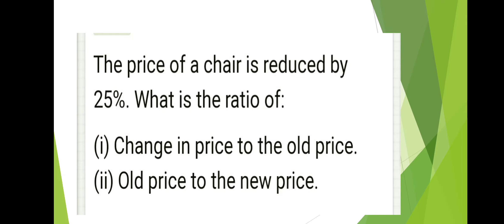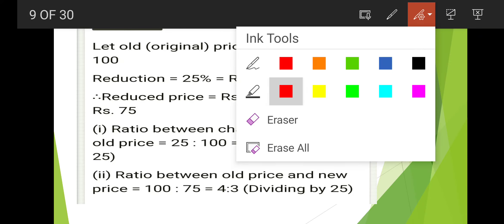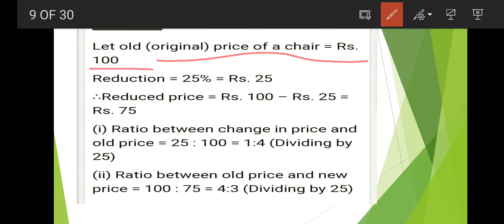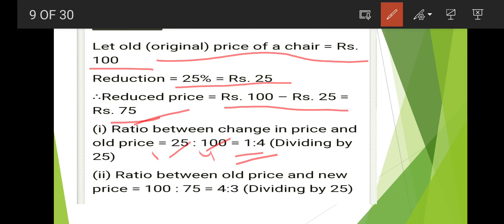Next: the price of a chair is reduced by 25%. Find the ratio of change in price to old price, and old price to new price. Let the old price be 100. Reduction is 25%, so reduced price is 100 minus 25 equals 75. Change in price is 25 and original price is 100, so the ratio is 25:100 which simplifies to 1:4. Old price is 100 and new price is 75, so ratio is 100:75 which simplifies to 4:3.